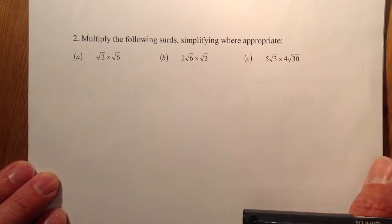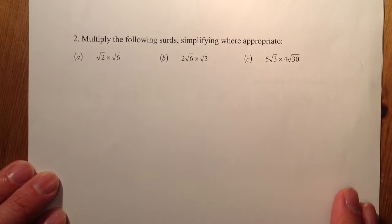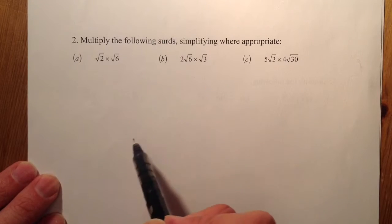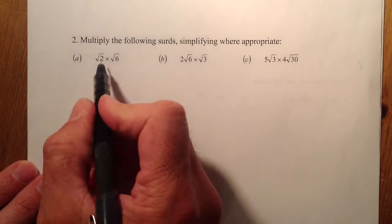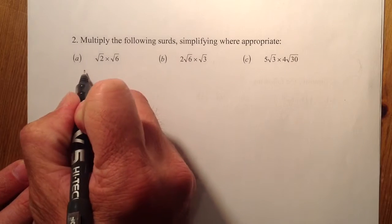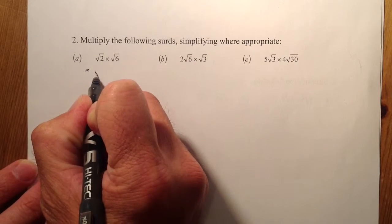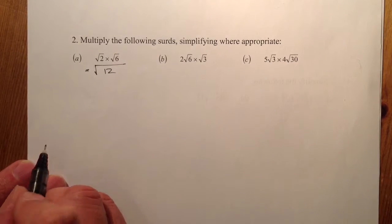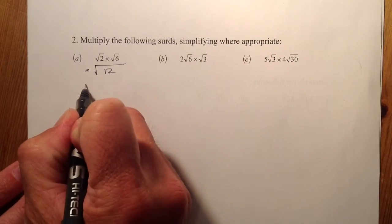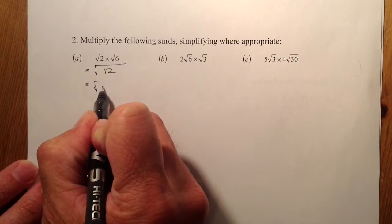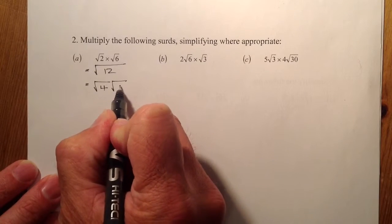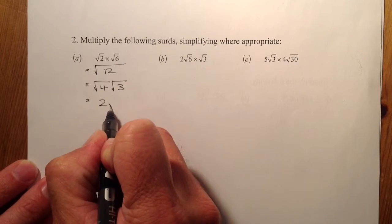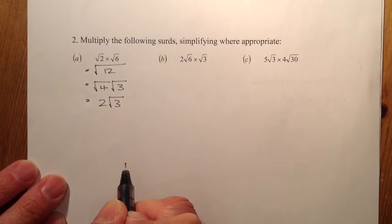Question 2. We're going to multiply the following surds and simplify where appropriate. I've got root 2 times root 6. When I multiply surds, I can gather them together under the one root, so that's going to be root 12. Root 12 I can simplify down with a square number — it'll be root 4 times root 3 — and then my solution will be 2 root 3.